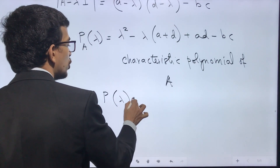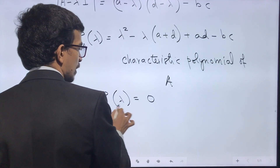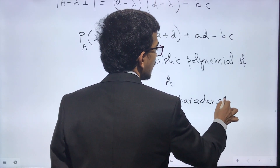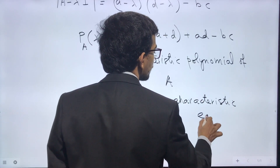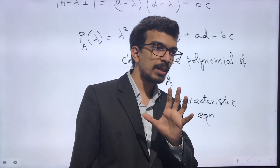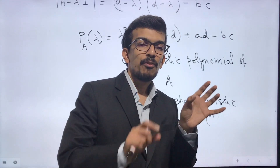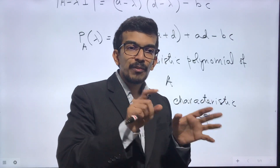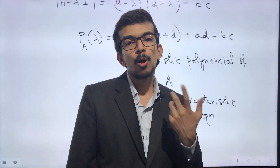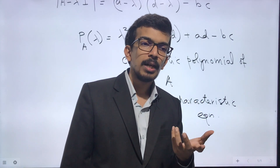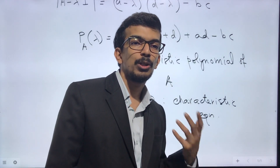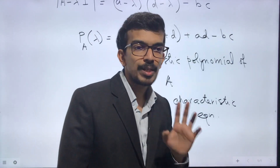If we set P(λ) = 0, this is called the characteristic equation. So far, we have taken a matrix, found the determinant of (A - λI), which comes out as a polynomial in λ, and equating it to zero gives the characteristic equation.